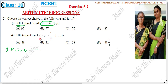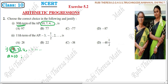So from the data, the first term A equals 10. Since it is an AP, the difference will be common throughout the sequence — the sequence increases by a fixed number. To find the common difference D, we compute D equals A2 minus A1, which is 7 minus 10.